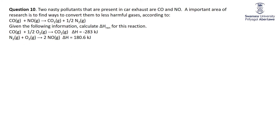Question 10: two nasty pollutants in car exhaust. The target equation is CO + NO → CO₂ + ½N₂, and I want ΔH. I'm given two equations — let's label them 1 and 2 — which contain the components of the target. Let's work out how to modify equations 1 and 2 so that when added together they give the target equation.